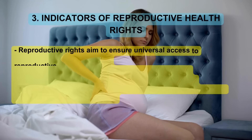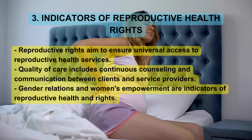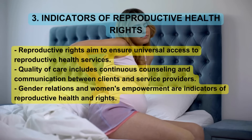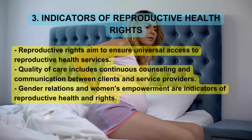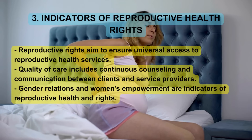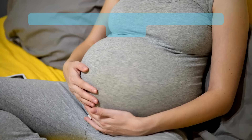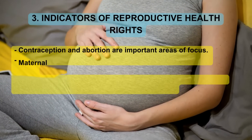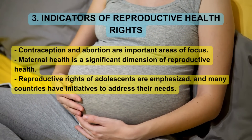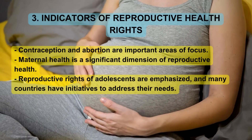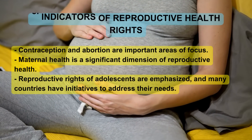Indicators of Reproductive Health Rights. Reproductive rights aim to ensure universal access to reproductive health services. Quality of care includes continuous counseling and communication between clients and service providers. Gender relations and women's empowerment are indicators of reproductive health and rights. Contraception and abortion are important areas of focus. Maternal health is a significant dimension of reproductive health. Reproductive rights of adolescents are emphasized, and many countries have initiatives to address their needs.